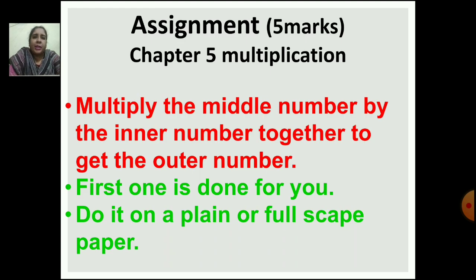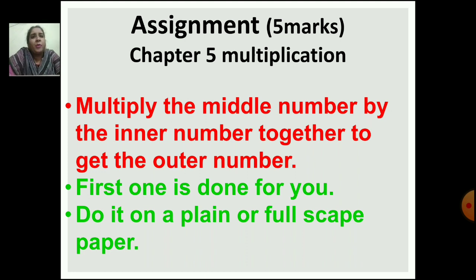Now let's talk about the assignment. Assignment is for 5 marks and it is from Chapter 5 — Multiplication. Multiply the middle number by the inner number to get the outer number. The inner number is multiplied by the middle number to get the outer number. The first sum is done for you, so you can see how I have done it and do the same. This assignment you also have to do on a plain or fullscape paper — any plain, drawing, or fullscape paper you have at home.